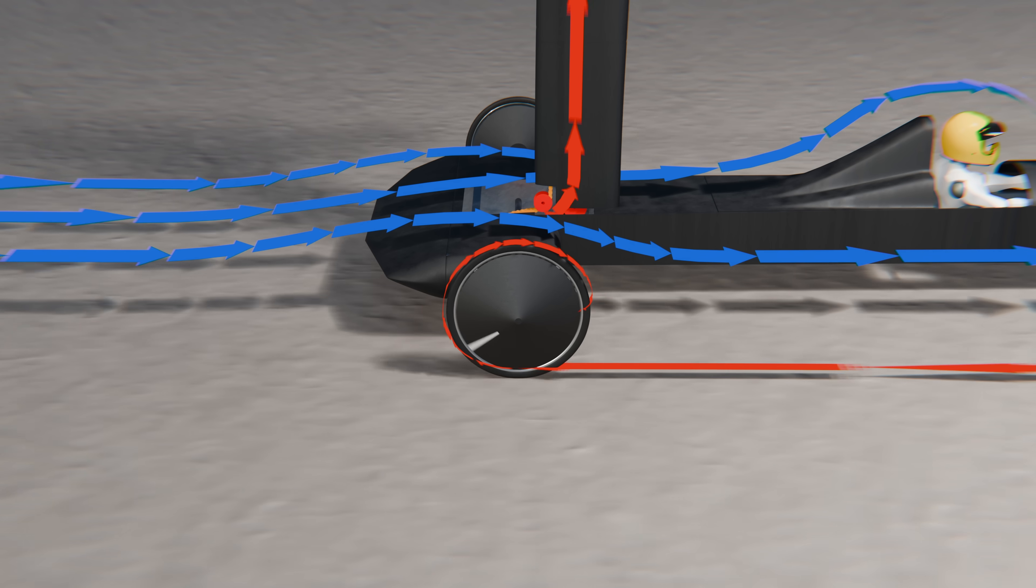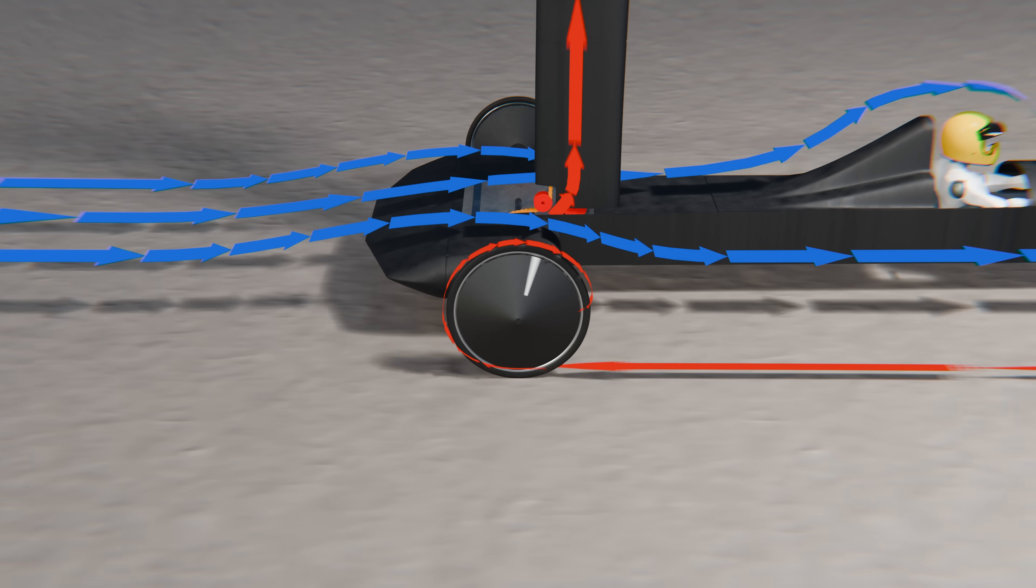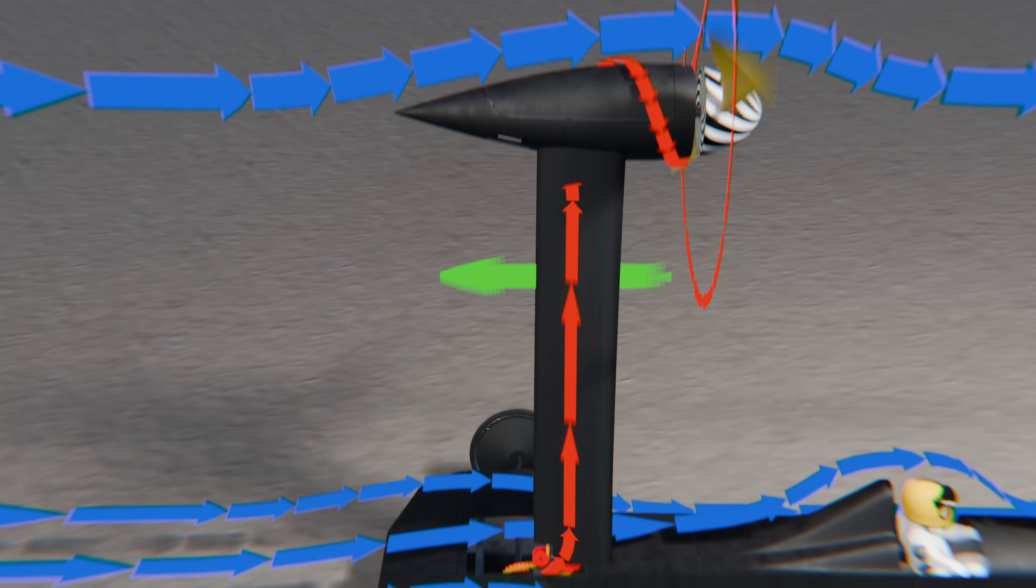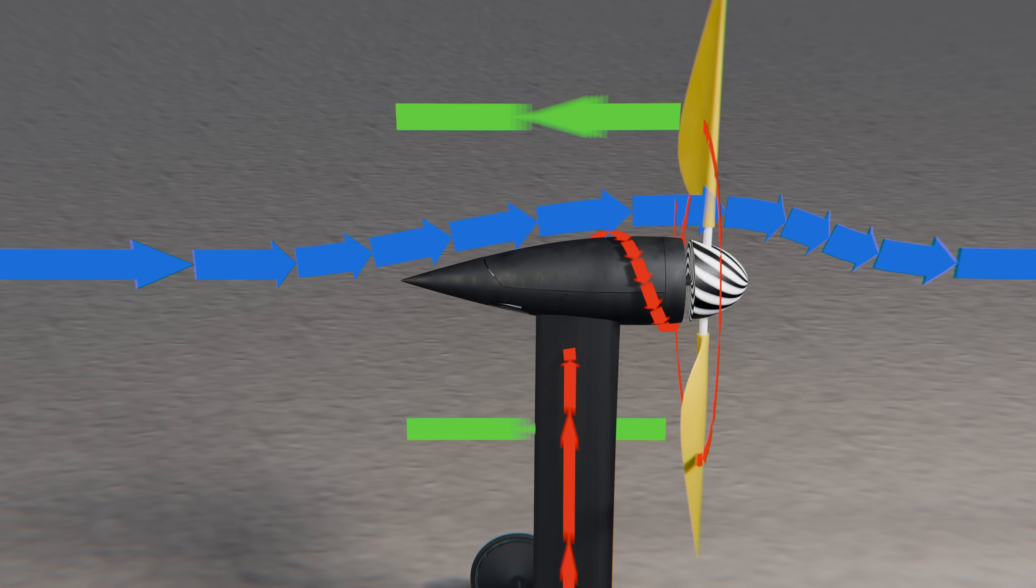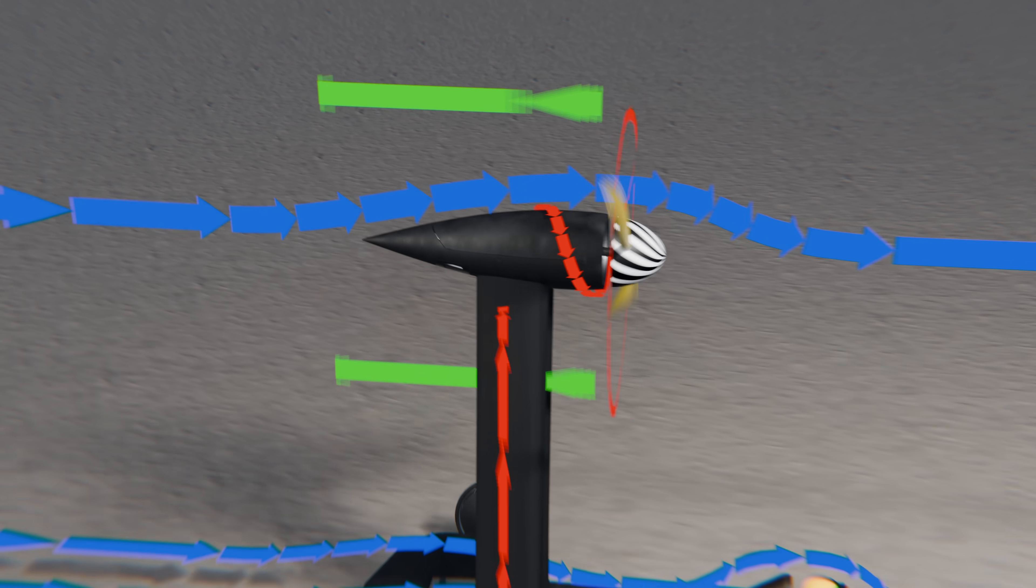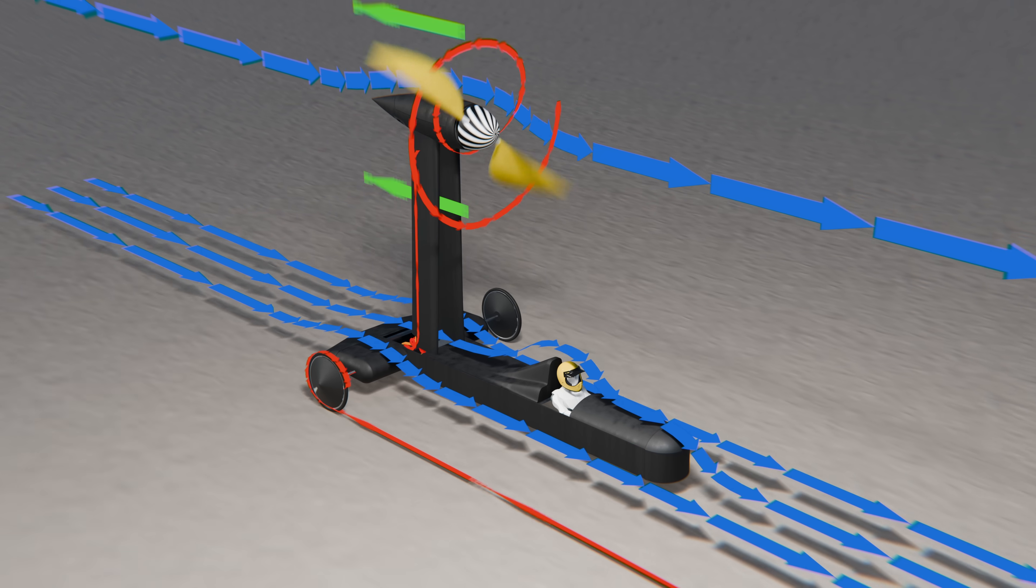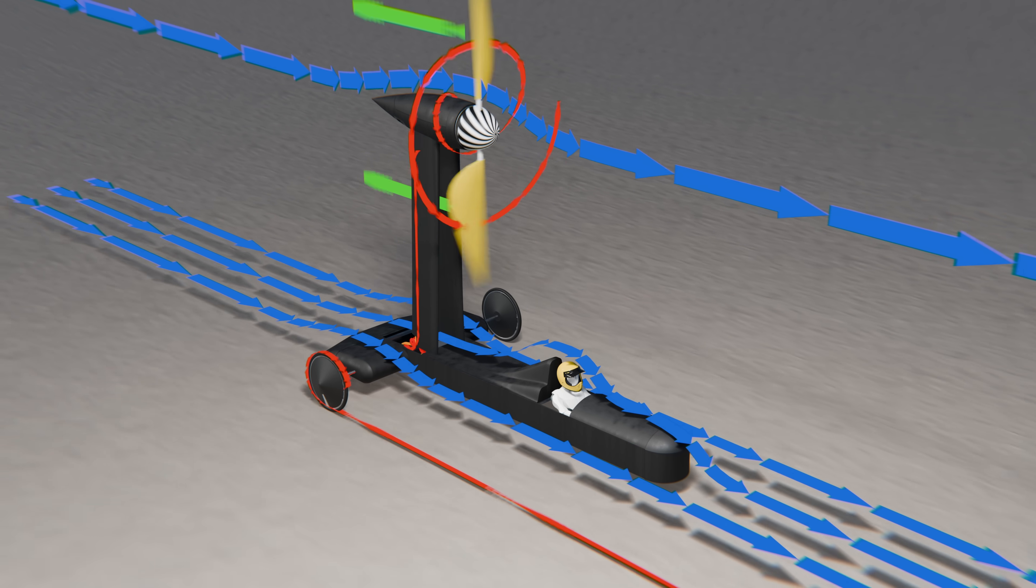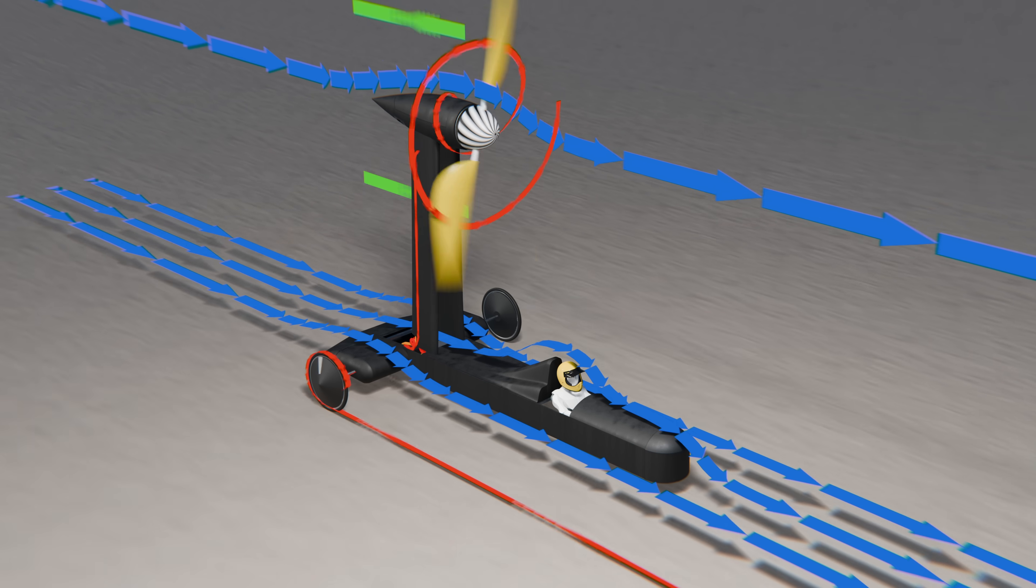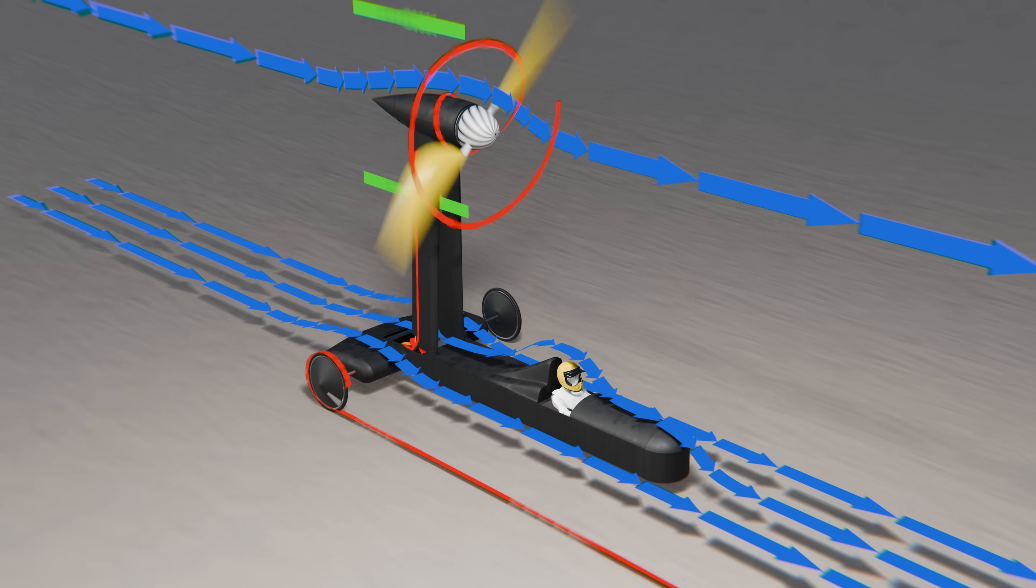The wheels extract energy from the ground by resisting rolling, and that energy is transferred via the drivetrain to the propeller, which uses it to push air backwards, generating more forward thrust. Once the car goes faster than the tailwind, it's no longer being pushed passively. Instead, it's actively mining kinetic energy from the difference between the wind and the ground.